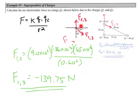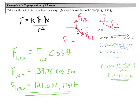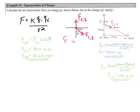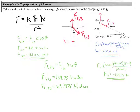From our free body diagram, we can see that force one on three has an angle, so we have to resolve it into its vector components. For the x-component, we use force one on three times cosine of the angle. That negative sign is simply directional, so we use the absolute value to find the x-component, which ends up being 121 newtons to the right. For the y-component, we use sine of the angle, giving us 69.875 newtons in the downward direction.